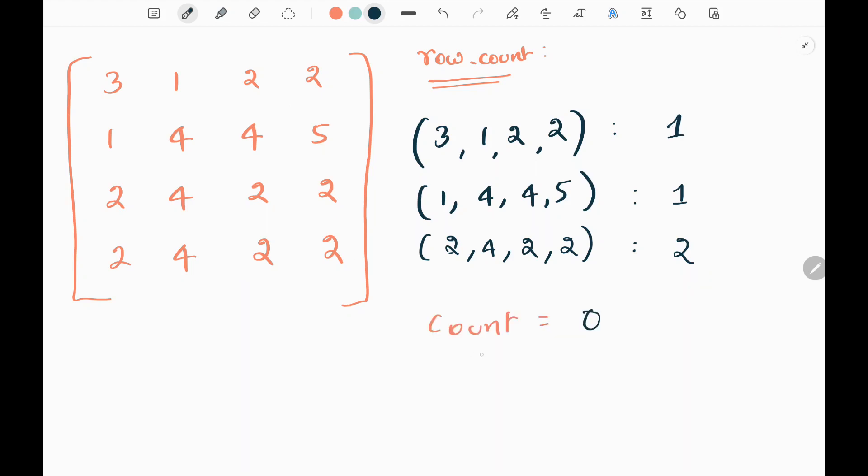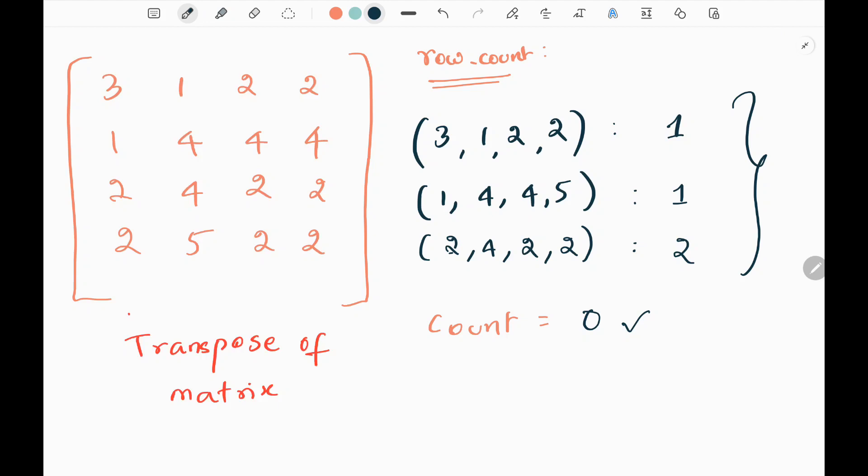Then I will be having a count variable which will be initialized as 0. So this will be our result variable. After that we have to take transpose of the given grid. So the reason why we are taking transpose is that we will be able to access the columns as we have done with the rows. So now we need to check the columns. So in order to access the columns we need to take transpose. So here I have the transpose matrix of the given grid.